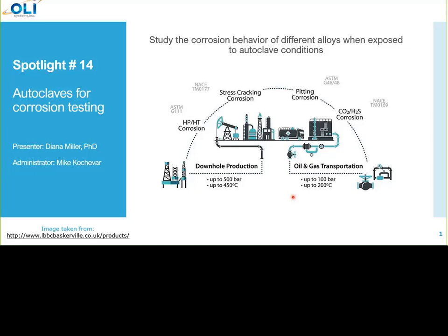Materials that are going to operate in H2S, CO2, and chloride environments need to undergo rigorous corrosion testing. The most important parameters to control in corrosion testing are usually partial pressures of the reactive gases, temperature, and the chloride content.